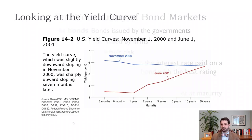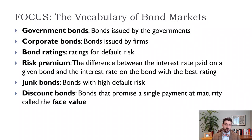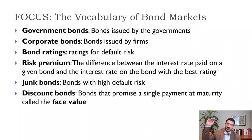Government bonds are bonds issued by the government. In the United States, the federal government issues Treasury Bonds and Treasury Bills, but state and city governments also issue bonds, referred to jointly as municipal bonds. Corporate bonds are bonds issued by firms when they want to raise money on the bond market. Bond ratings are ratings for default risk, and there are three main companies that do it: Standard & Poor's, Moody's, and Fitch. They range from triple-A all the way down to D, which means the issuer has defaulted.